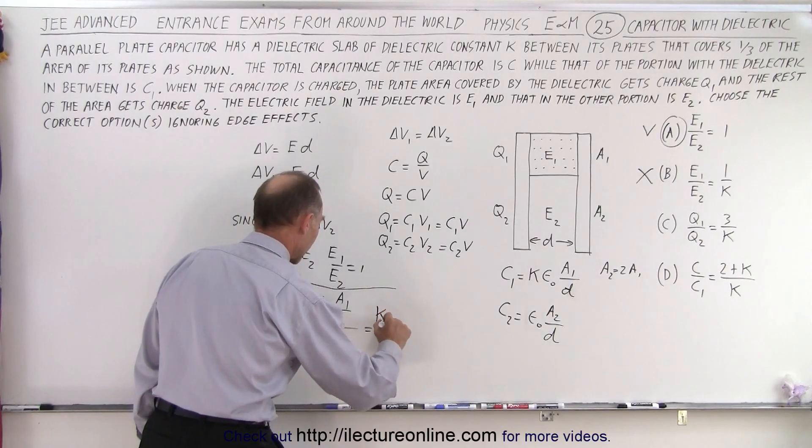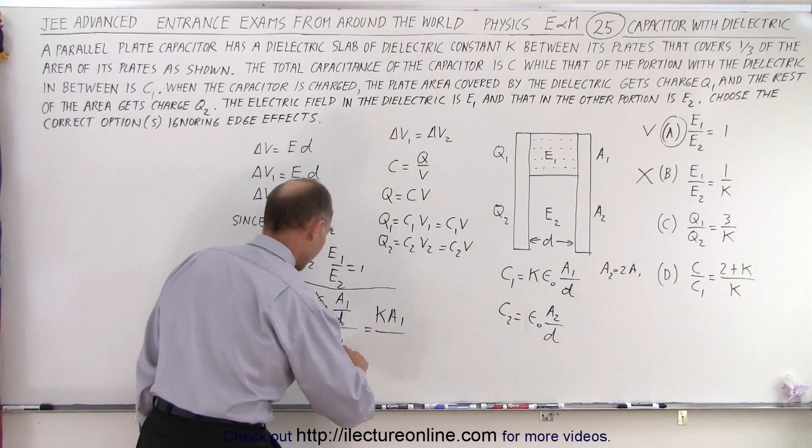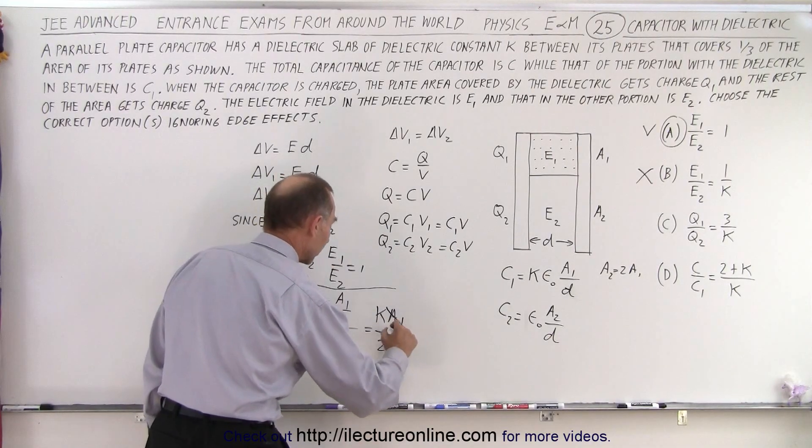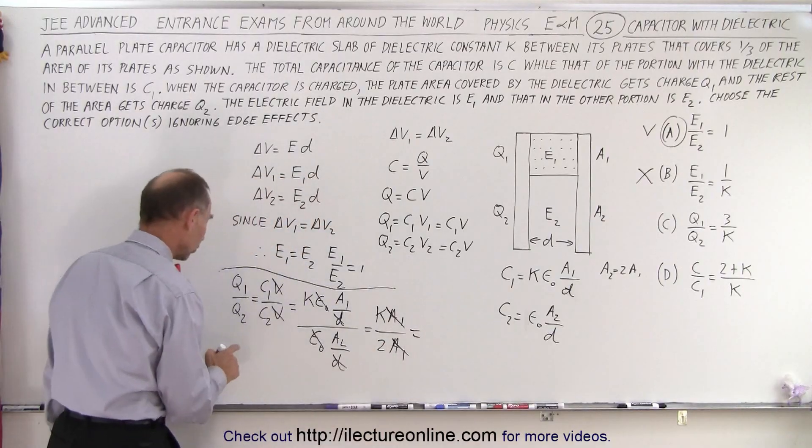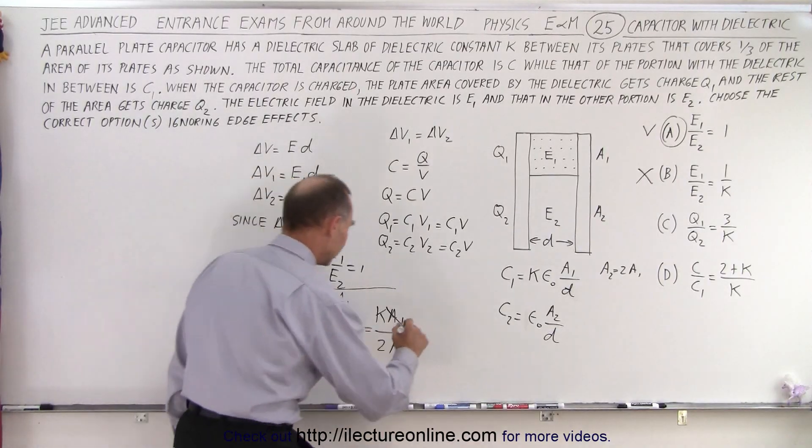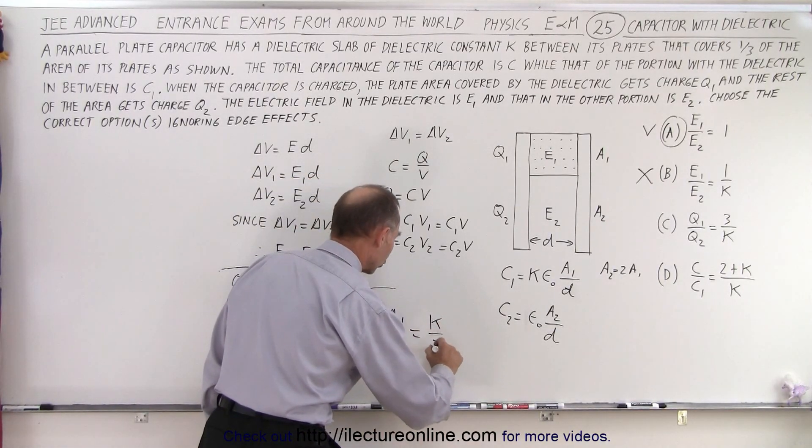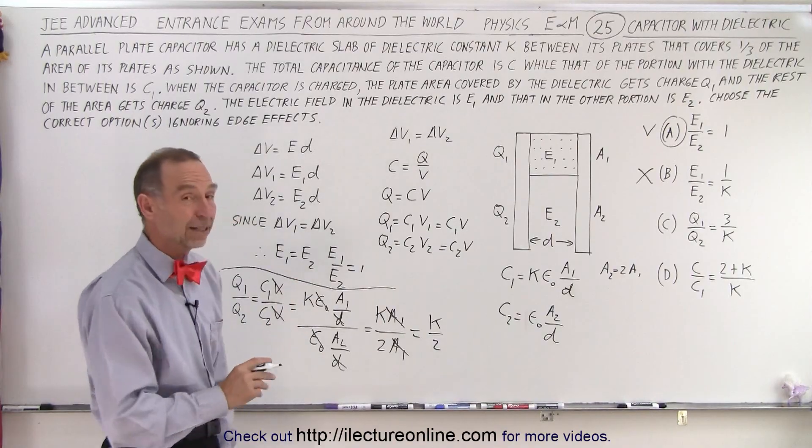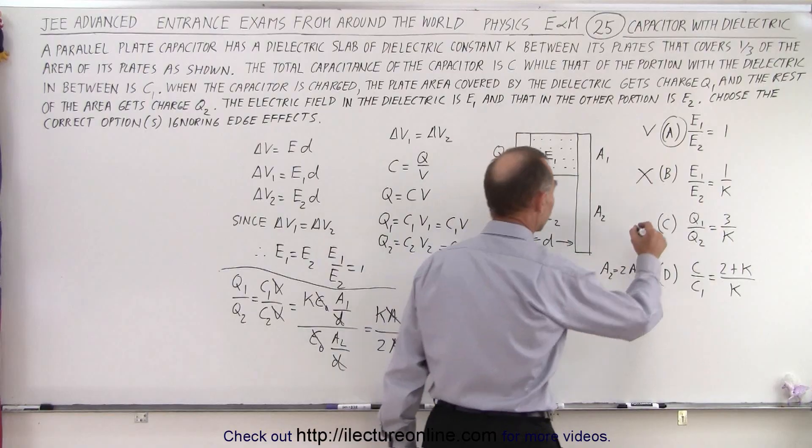so this can be written as K A1 divided by A2 is 2 times A1, A1s cancel out, so the ratio of Q1 over Q2 is equal to K over 2. And notice they tell us it's 3 over K, so that we know is not correct.